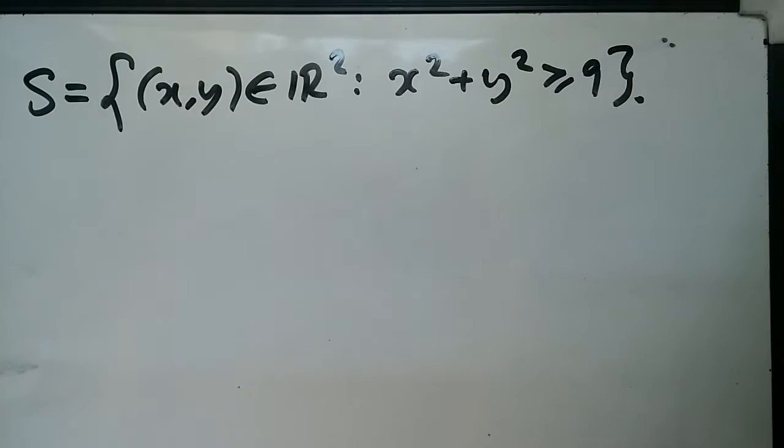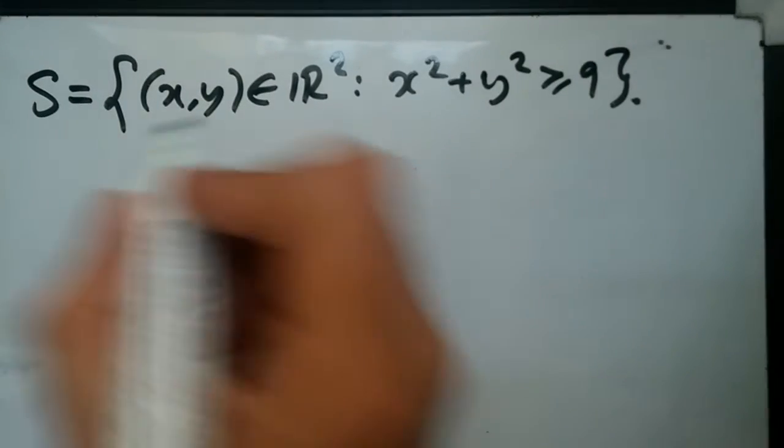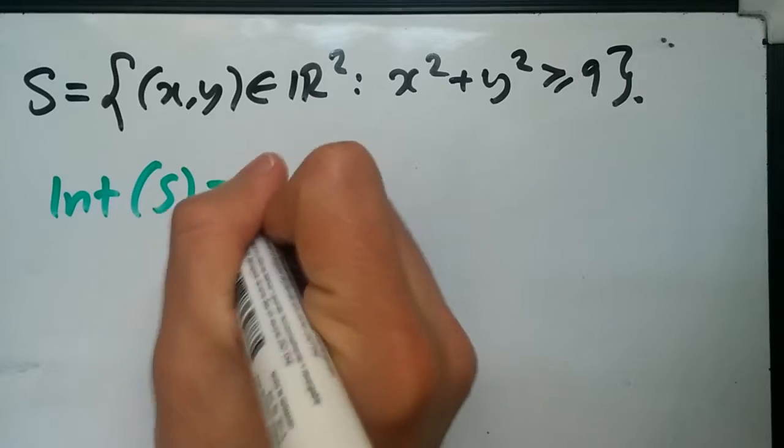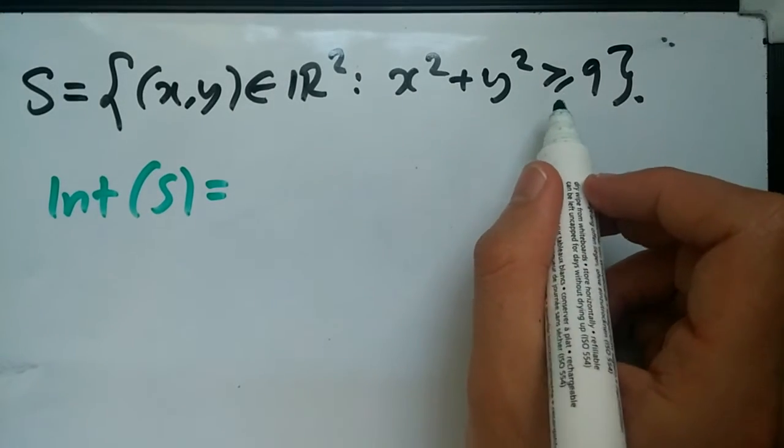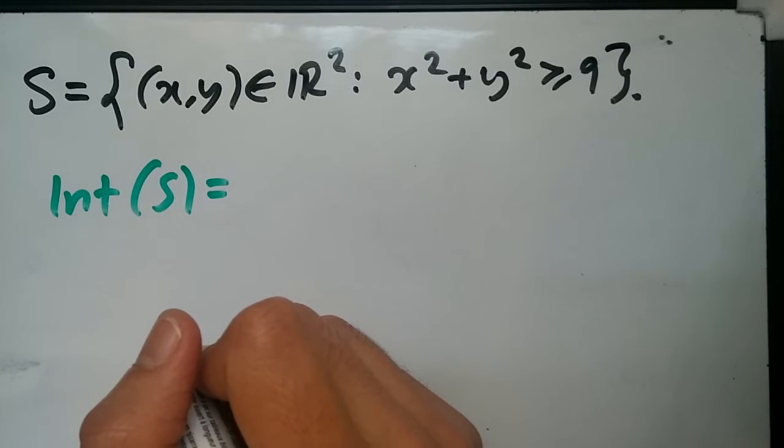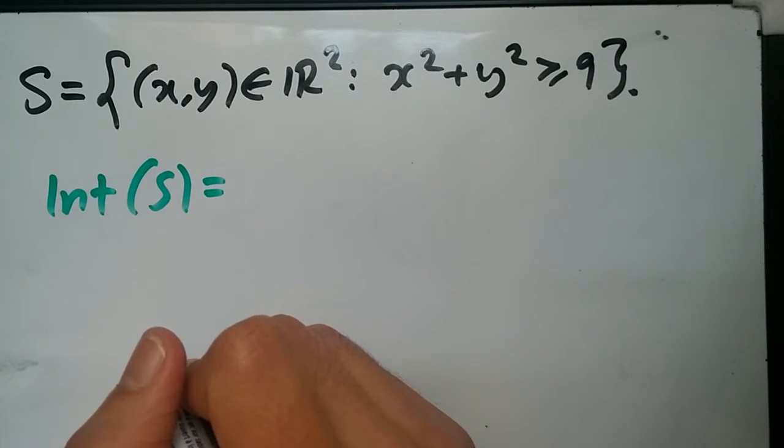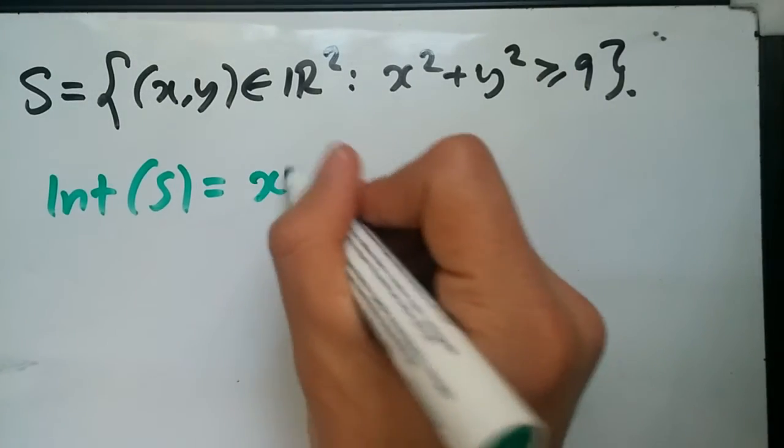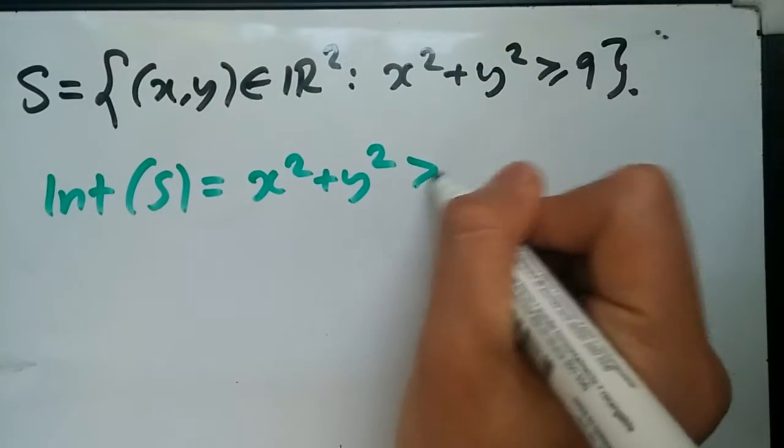Once again, notice that we have an equal sign there. So this would imply something else. Now we say that the interior of this set is actually not greater than or equal. Remember, the interior, when we drew the map, was a dotted line. A dotted line doesn't mean it's equal. It means it's just inside it. In other words, it does not equal that line. Equal would be the boundary. So this would be x² + y² > 9.